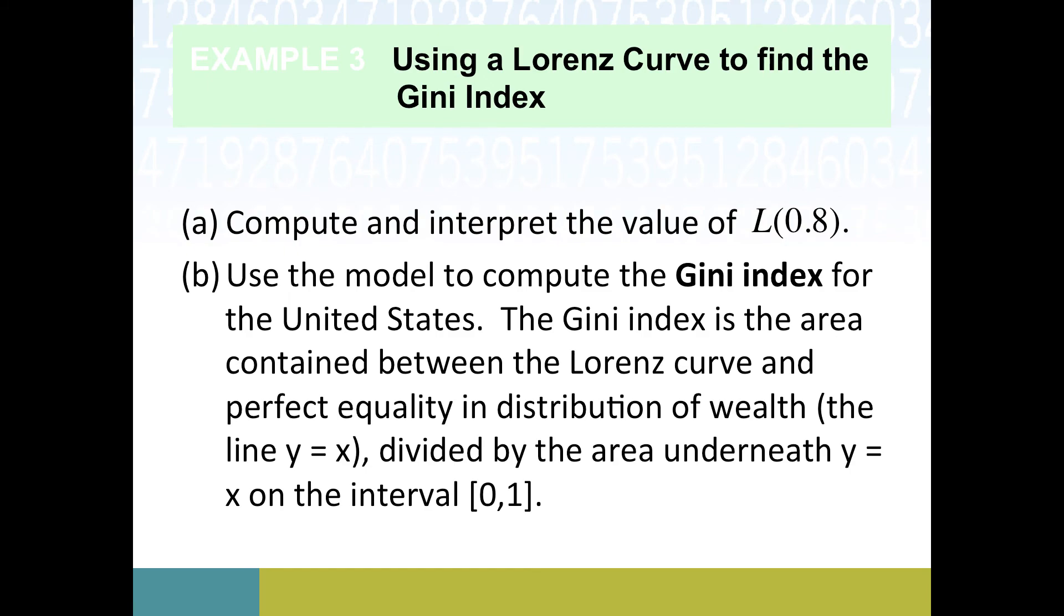We'll come back to review this definition, but it's described as the area between the Lorenz curve and perfect equality. So if everybody in the society had the exact same amount of money, then your Lorenz curve would be the line Y equals X. We're going to look at how far off our Lorenz curve is between the actual and what the perfect equality would be. And since we're computing area between two curves, you guessed it, we're in our indefinite integral territory there.